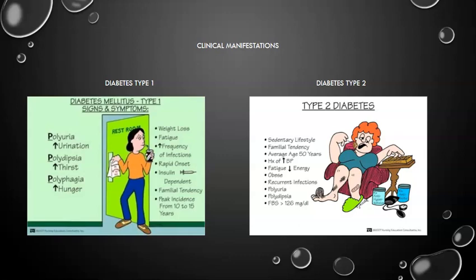Ten to fifteen years is the typical time frame you'd see type 1 present. For type 2 diabetes — adult onset — sedentary lifestyle, lack of exercise, and poor diet are factors. Average age of diagnosis is about 50 years. These patients likely have a history of hypertension, are often obese, fatigued, and have recurrent infections due to poor circulation. You'll also see polyuria and polydipsia. Diagnosis is confirmed with fasting blood sugars higher than 126.